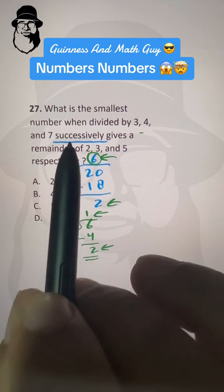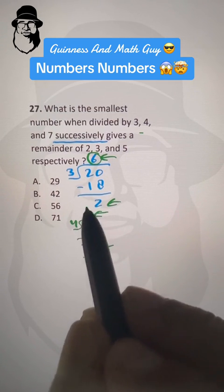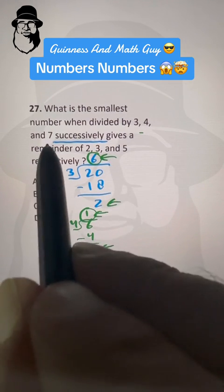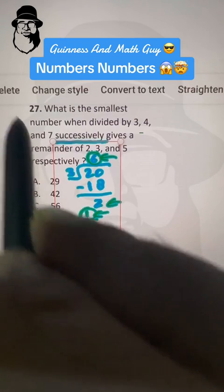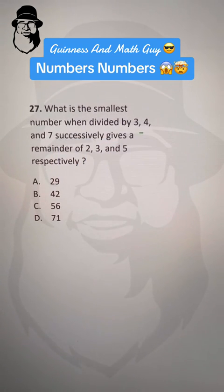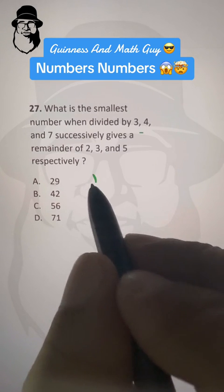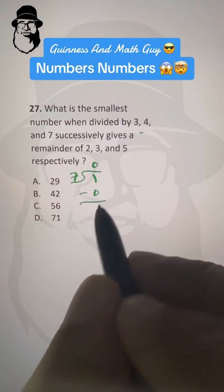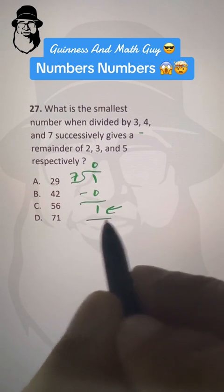Then same successively means this answer 1, we divide it by 7. Let me erase this. So 7 times 0 is 0 and we have remainder of 1.